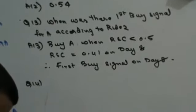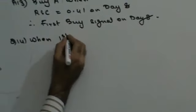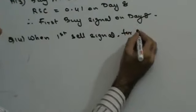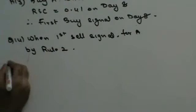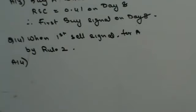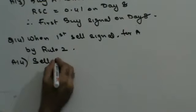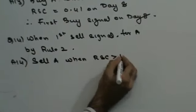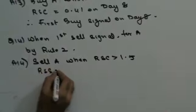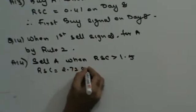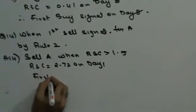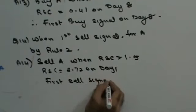Question 14: when was the first sell signal for A according to Rule 2? Rule 2 says sell A when RSC is greater than 1.5. On day 1, RSC is 2.72, which is greater than 1.5. So the first sell signal for A is on day 1.